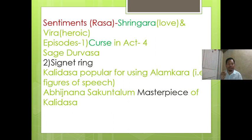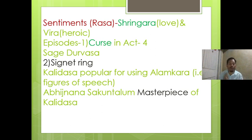Sentiments — that is, rasa or emotions — are important in this play. We find two dominant rasas: one is Shringara, which means love, and the other is Vira rasa, which means heroic. The significance of the curse and the signet ring are also very important for examination purposes. Kalidasa is also popular for using alamkara, which means figures of speech.